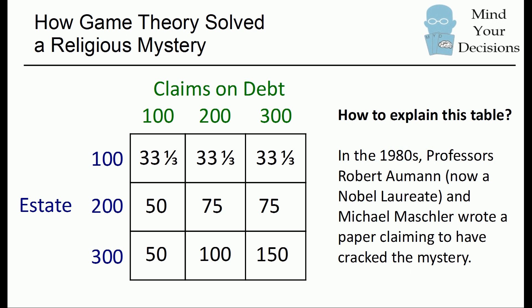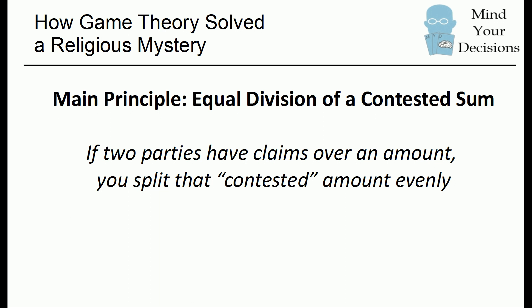So how to explain these numbers? Well, in the 1980s, professors Robert Aumann — now a Nobel laureate — and Michael Maschler wrote a paper claiming a game theory explanation for the logic behind these numbers. I provided the sources in the description of the video. The paper is a very interesting read with a nice explanation, and that's what I'm basing this entire presentation on. So let's see what they did. This is to explain a game theory principle, or just a social custom of how you divide things. There's something they termed an equal division of a contested sum — meaning if two people are arguing about a certain amount, whatever's contested, you should split that between them. That's the principle we're going to use to understand the division.